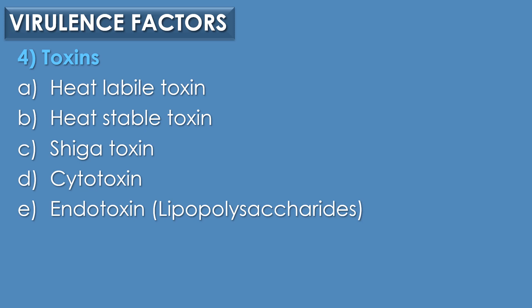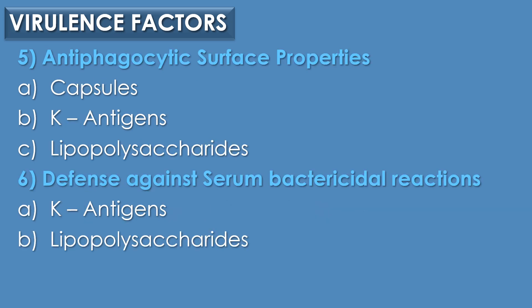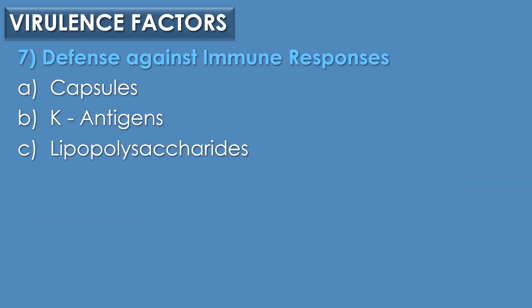The fourth virulence factor is toxins. It includes heat-labile toxin, heat-stable toxin, shiga toxin, cytotoxin, and finally endotoxin, i.e., lipopolysaccharides. The fifth virulence factor is anti-phagocytic surface properties; it includes capsules, K-antigens, and lipopolysaccharides. The sixth virulence factor is defense against serum bactericidal reactions; it includes K-antigens and lipopolysaccharides. Finally, the seventh virulence factor is defense against immune responses; it includes capsules, K-antigens, and lipopolysaccharides.